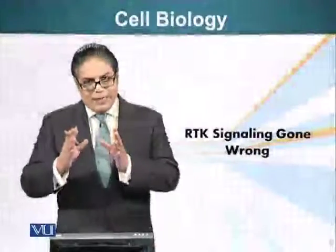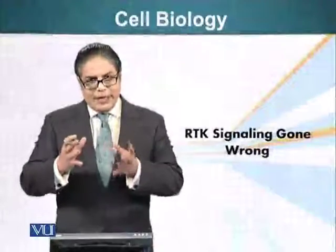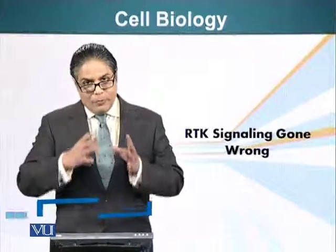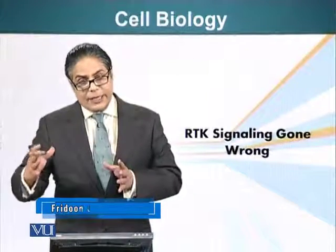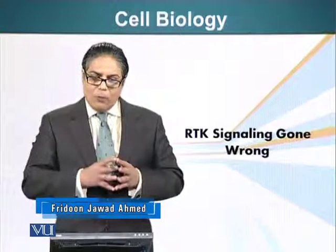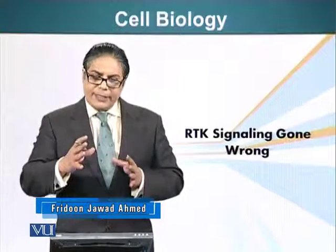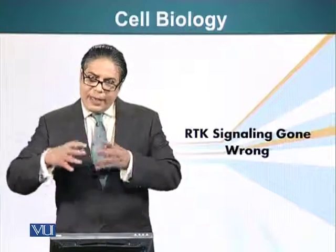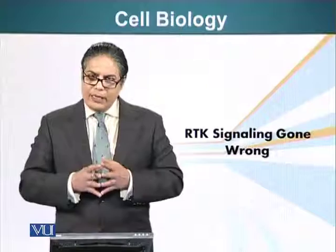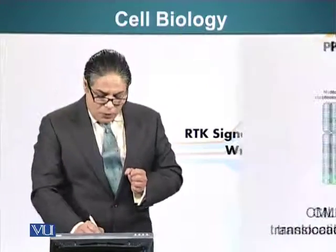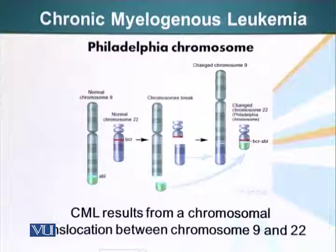We have said that signals received by receptor tyrosine kinases result in, among other things, telling cells to divide. One of the things these signals do is result in activation of certain proteins, their kinase activity especially. So what happens when something goes wrong? Let's look at an example that happens in nature.